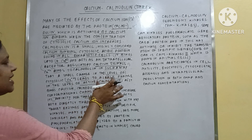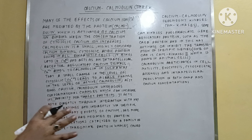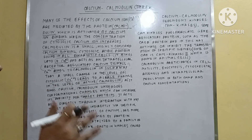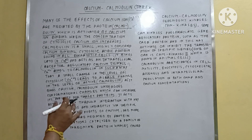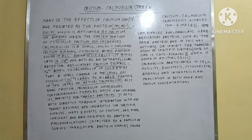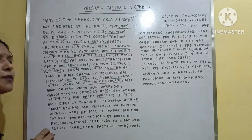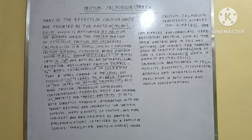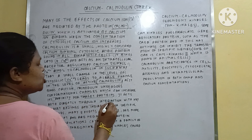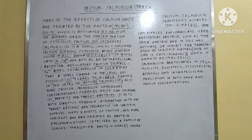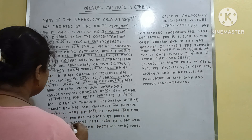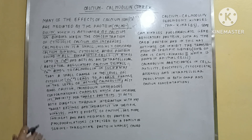As calmodulin binds calcium, it undergoes conformational changes which can increase its affinity for target proteins. That is why five calcium ions cannot bind with the calmodulin instead of four — it is not possible. This conformational change is forced by the binding of calcium ions with the calmodulin molecules. It acts both directly through interaction with key target enzymes and indirectly via specific kinases.